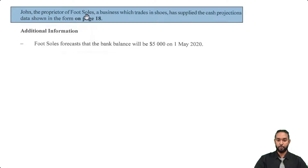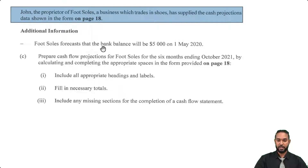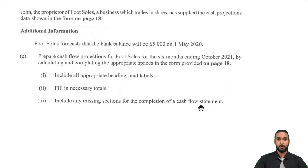Now let's look at part C. John, the proprietor of Futsouls, a business which trades in shoes, has supplied cash projections data. Futsouls forecasts a bank balance of $5,000 on 1st May 2020. We need to prepare the cash flow projections for Futsouls for the six months ending October 2021, completing appropriate spaces in the form, including all headings, labels, necessary totals, and any missing sections. Note: this should be called a cash flow projection, not a cash flow statement — a cash flow statement is an actual financial statement governed by accounting standards. I recreated the format so let's go through it piece by piece.